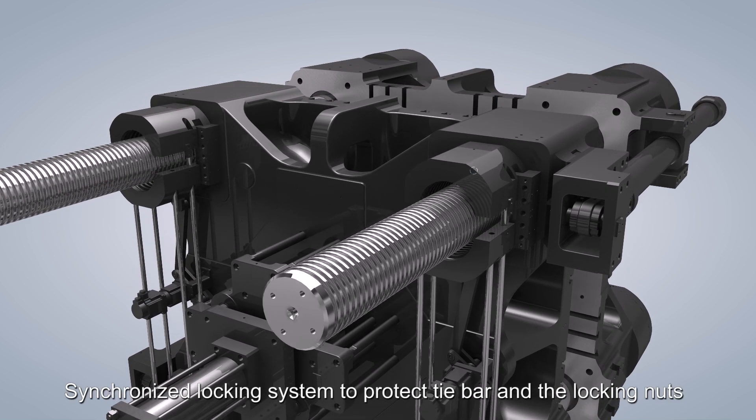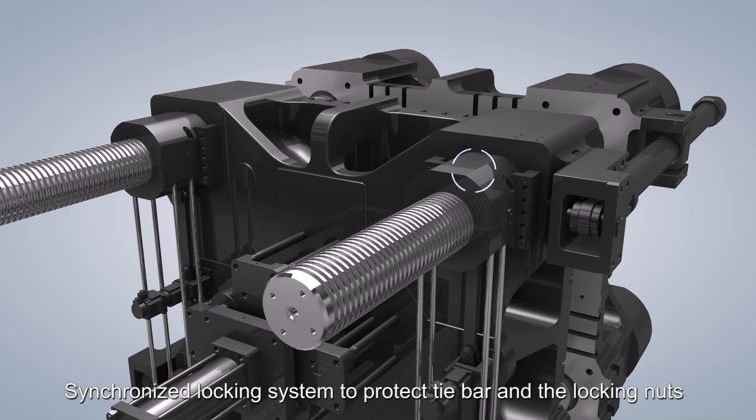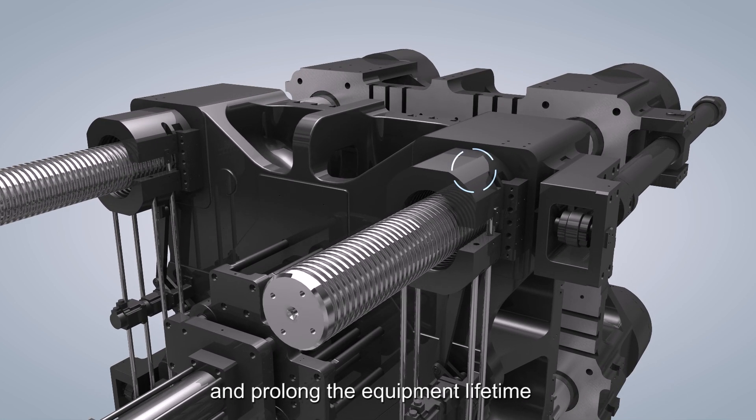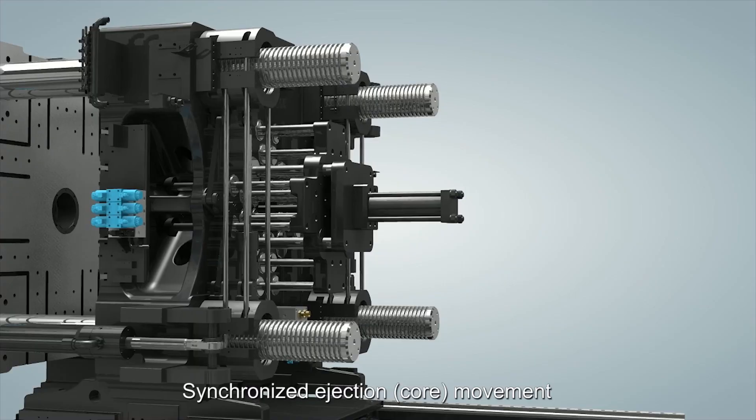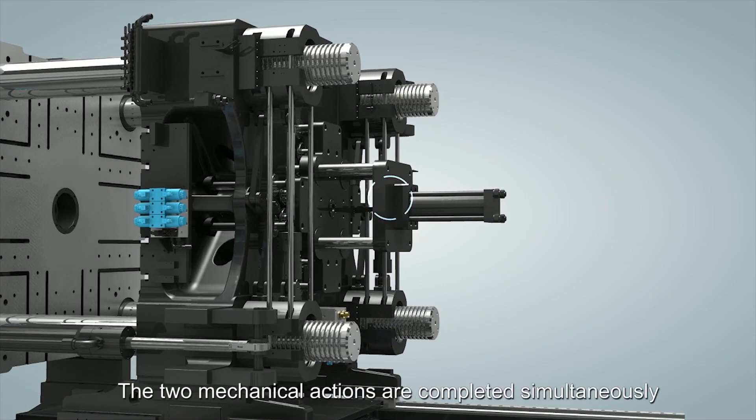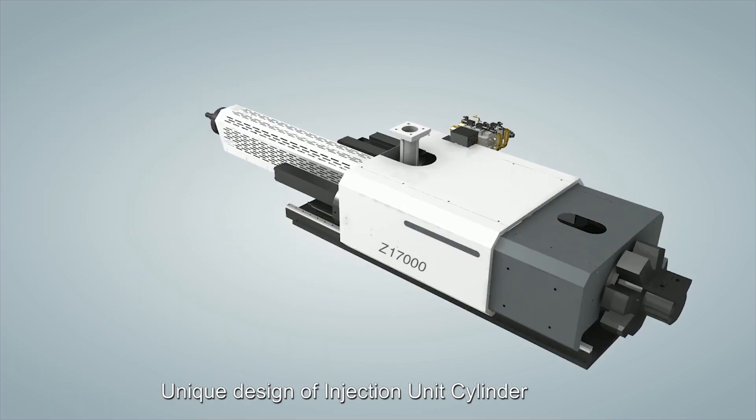Application of linear guide synchronizes the locking system to protect the tie bar and locking nuts, prolonging equipment lifetime. Synchronizes injection and movement—two mechanical actions completed simultaneously to increase efficiency.